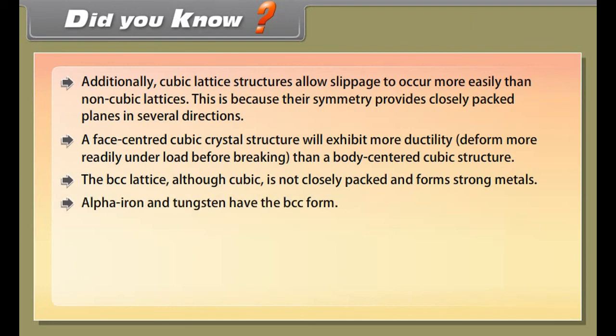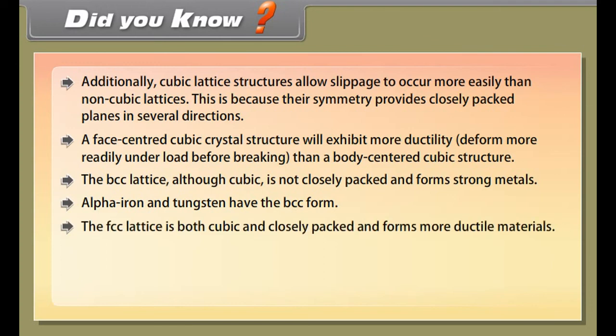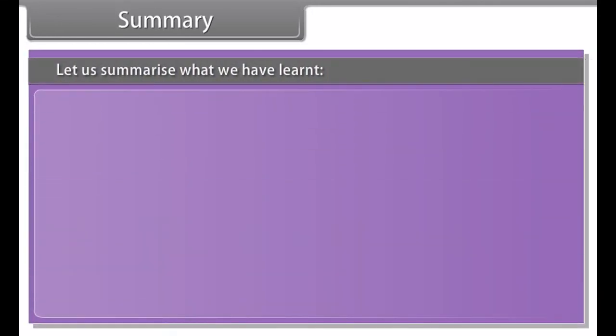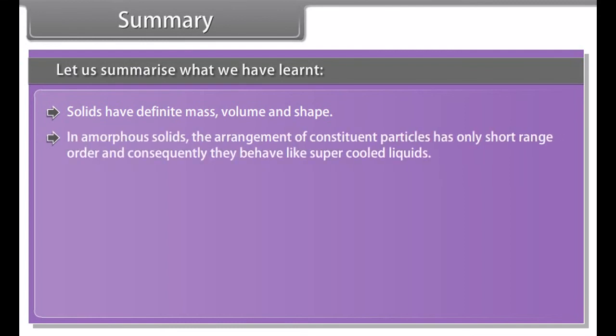Unit cell is characterized by its dimensions along three edges A, B, and C - these edges may or may not be mutually perpendicular - and angles between the edges: alpha between B and C, beta between A and C, and gamma between A and B. Thus a unit cell is characterized by six parameters: A, B, C, alpha, beta, and gamma.